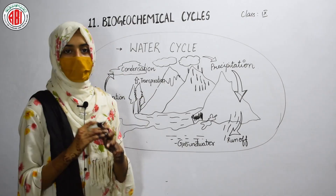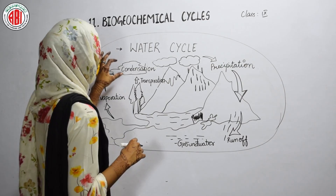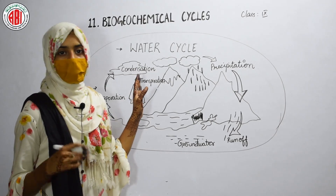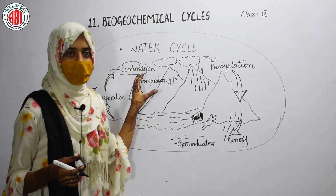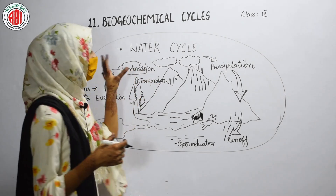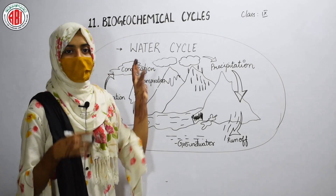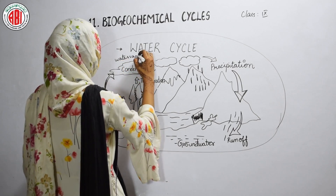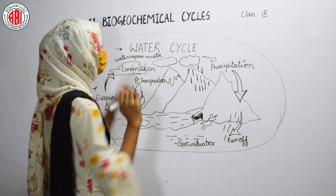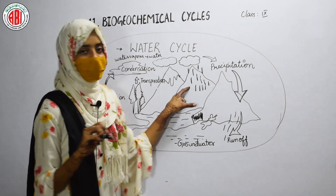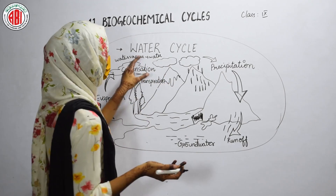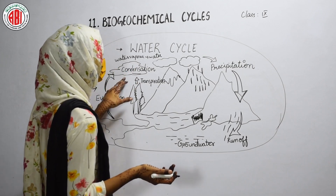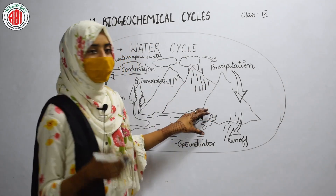After evaporation, the water vapor present in the atmosphere forms clouds. When these clouds touch the cool surface of a mountain cap, or when they become cool due to the climatic region, the water vapor in the clouds changes back into water — that is, condensation takes place. The water then falls down onto the earth in the form of rain or ice. The process of changing water vapor back into water is called condensation.